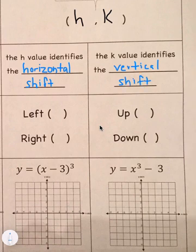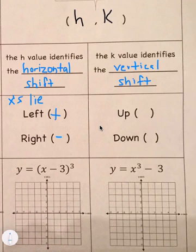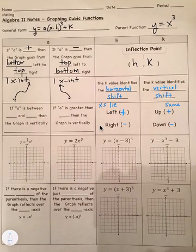A helpful reminder: x lies to you. So if we want to move left, we don't put a negative — it's a positive h. Moving right uses a negative h. The k value stays the same: up is plus, down is minus. So x lies, and the vertical shift stays the same.